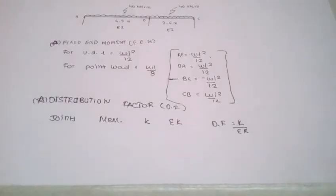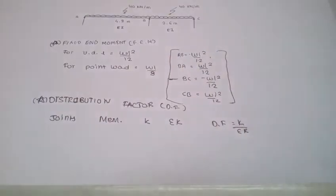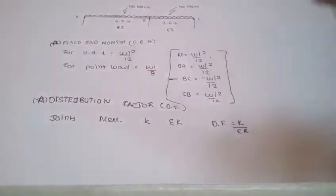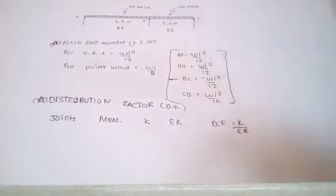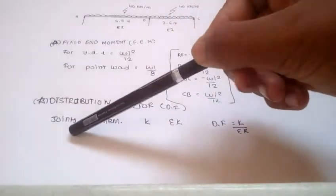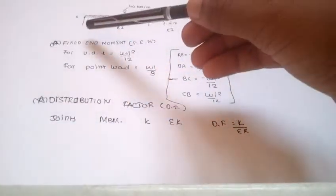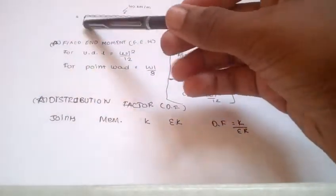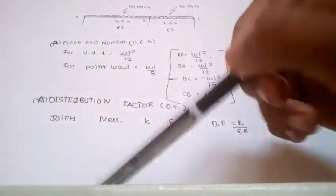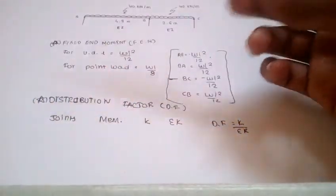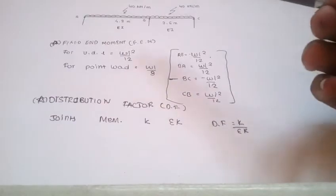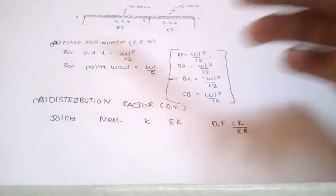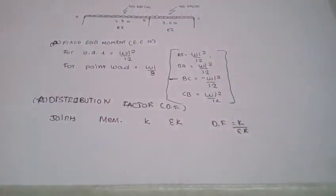Next is distribution factor. Distribution factors consist of a table of joints. We have joints A, B and C. Joint B has two members: BA and BC. So joint B will be written here, and it has members BA and BC. Joints A and C are simply supported and distribution factors are given by 1 for simply supported ends.